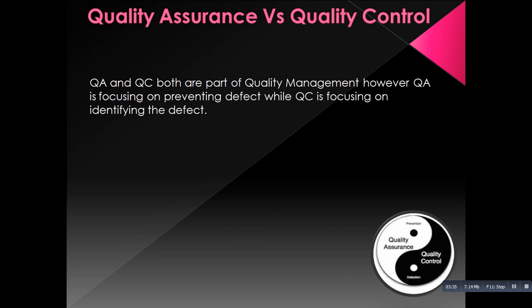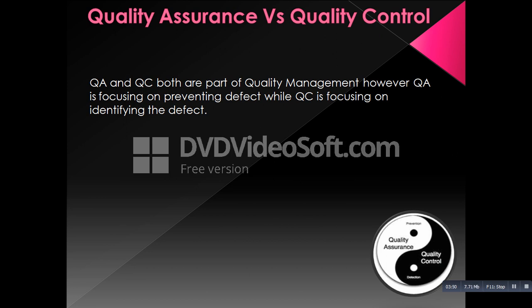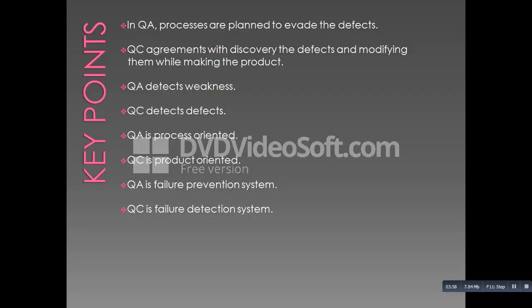Quality assurance is proactive, which means it focuses on prevention of defects, whereas quality control is reactive and focuses on identification of defects. Quality assurance contains static testing whereas quality control contains dynamic testing. In summary: QA plans to evade defects; QC deals with the discovery and modification of defects while making the product. QA detects weaknesses whereas QC detects defects. QA is process-oriented whereas QC is product-oriented. QA is a failure prevention system whereas QC is a failure detection system.